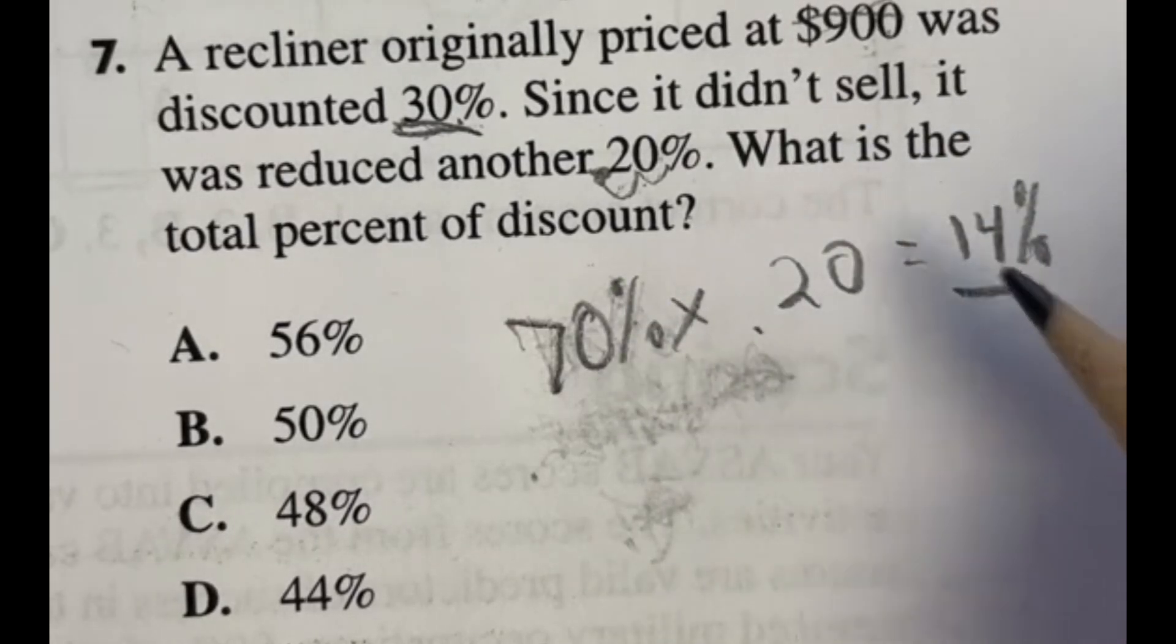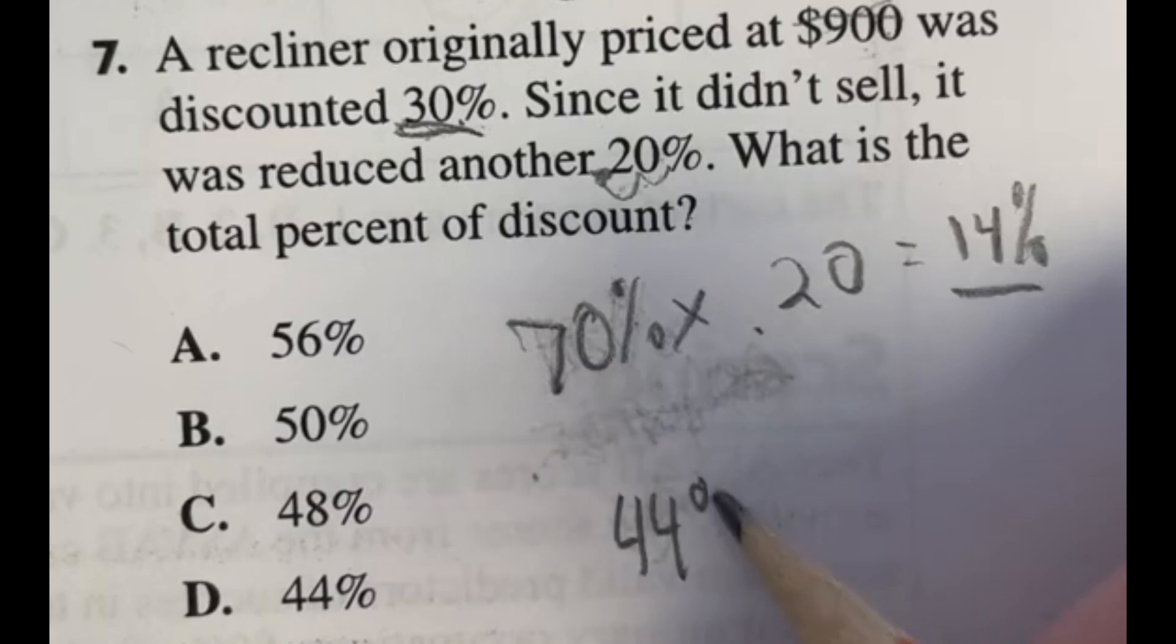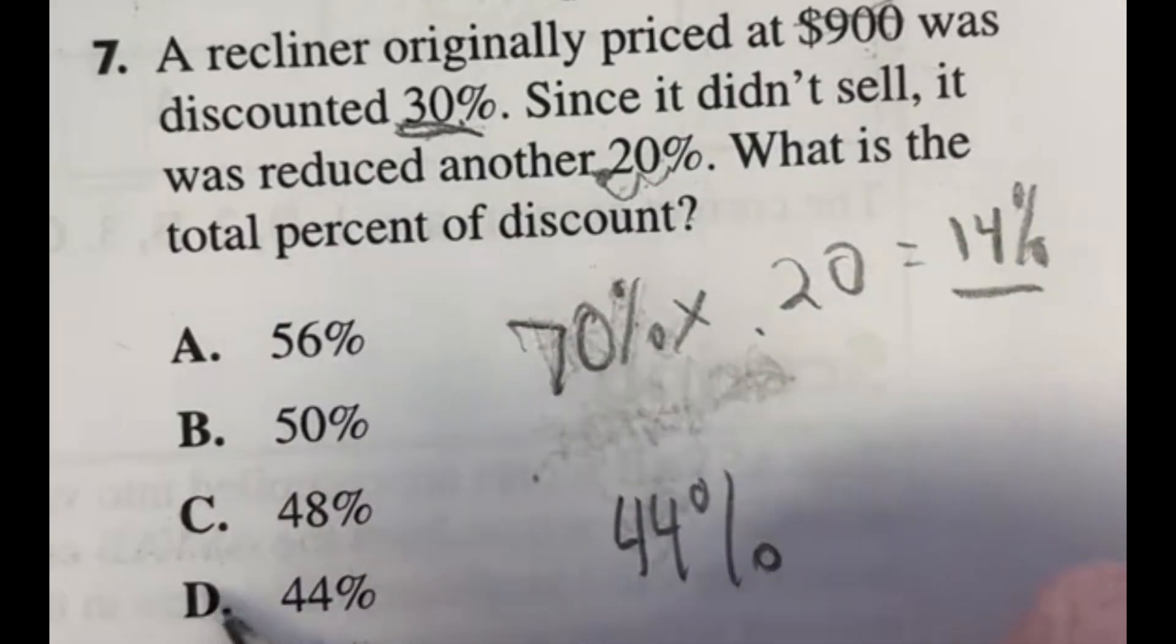So that means on top of this 30 percent off the original, I have another 14 percent off the original price that will be removed. So that means I'm going to have 30 plus another 14 for a total of a 44 percent discount, which is answer D.